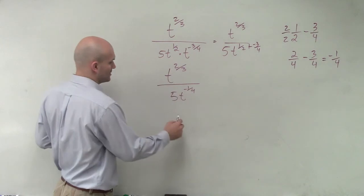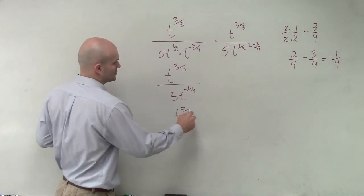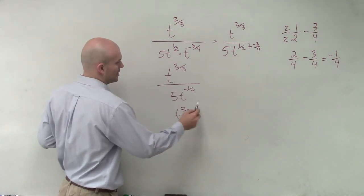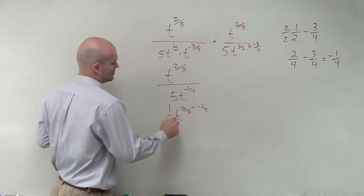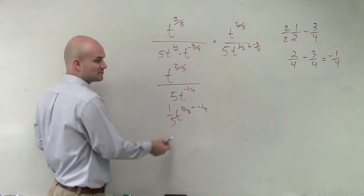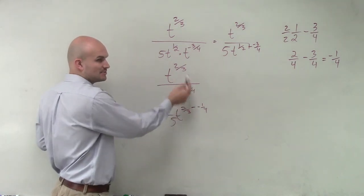That's all you'd be working with. So it'd just be t to the 2 thirds minus a negative 1 fourth. 1 divided by 5, so it's 1 fifth t. Remember, you subtract exponents when you divide.